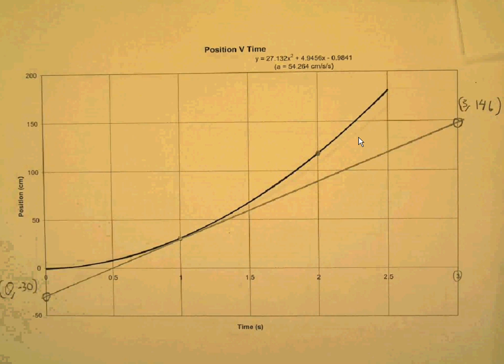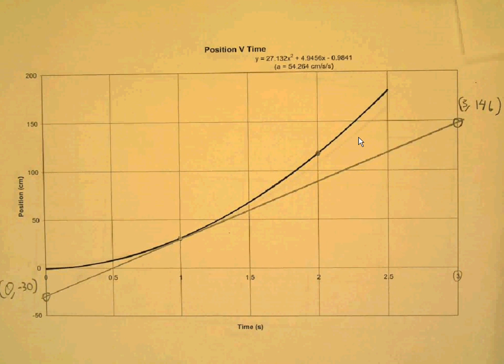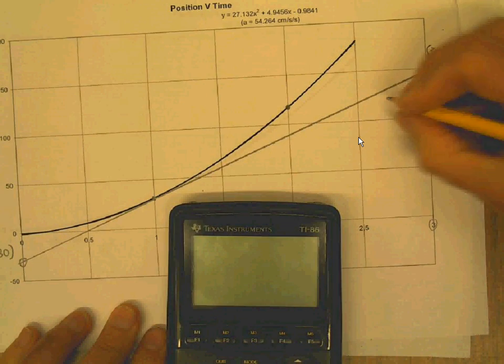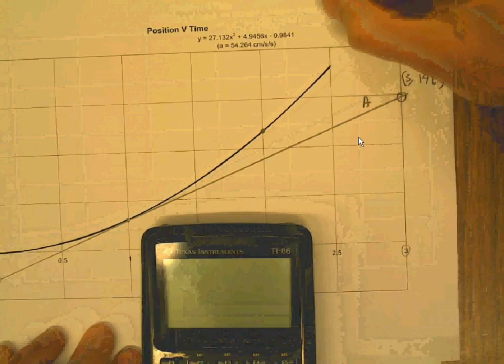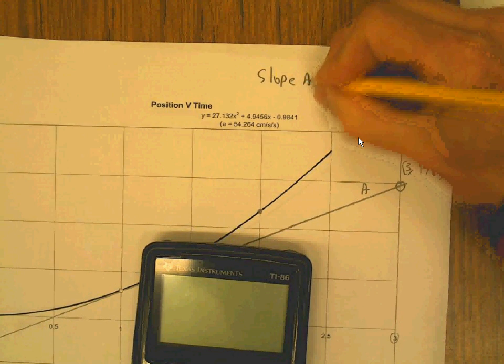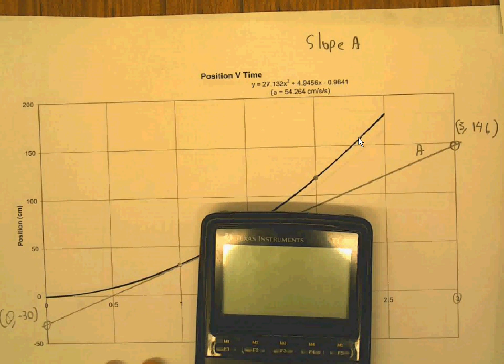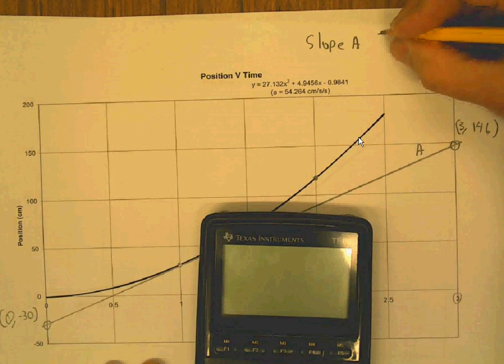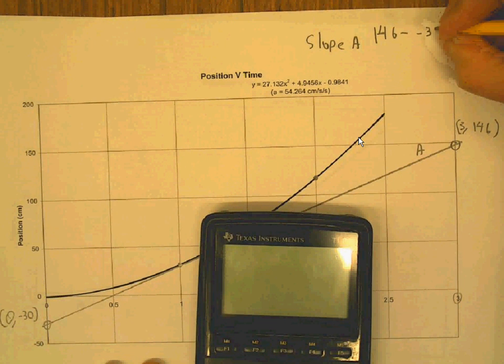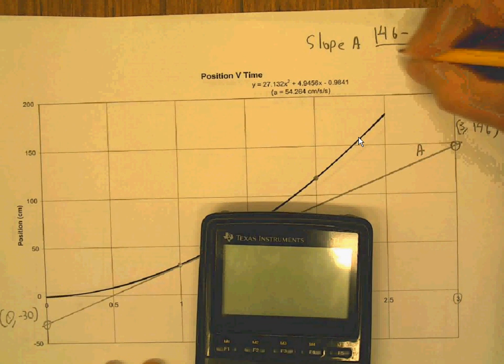So I'm just going to do that. I of course have a calculator right next to me. Now I'm going to calculate the slope. The formula I'm going to use for line A is y minus y over x minus x. So the slope A is going to be 146 minus negative 30, 146 minus negative 30 over 3 minus 0.